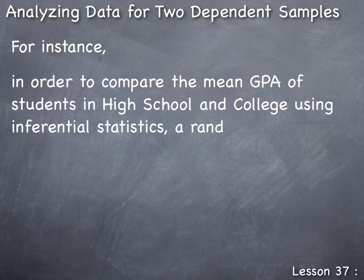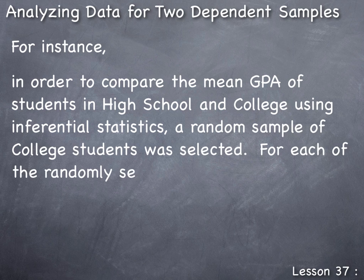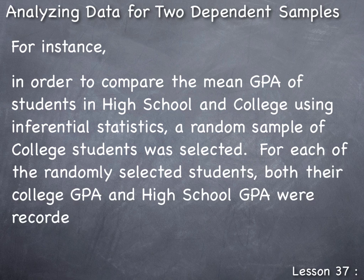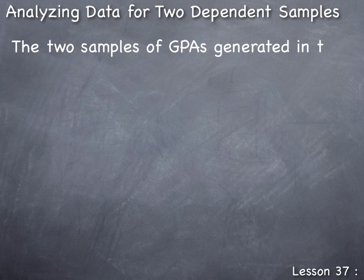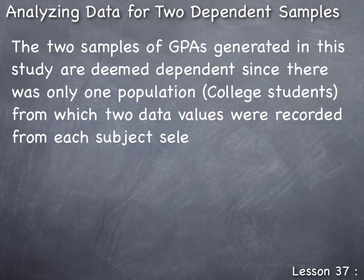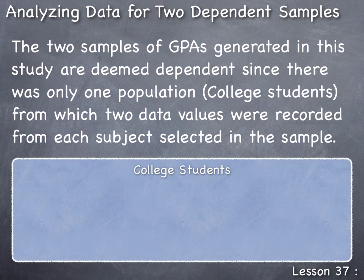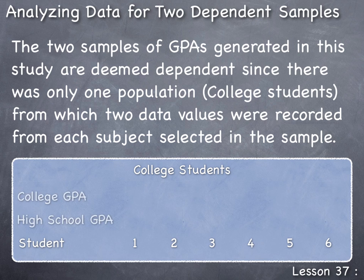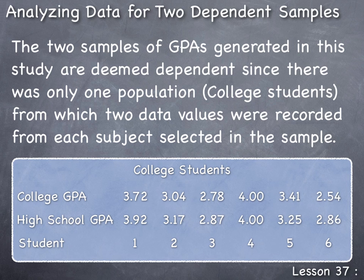For instance, in order to compare the mean GPA of students in high school and college, a random sample of college students was selected. For each of the randomly selected students, both their college GPA and high school GPA were recorded. The two samples of GPAs generated in this study are deemed dependent since there was only one population — college students — from which two data values were recorded from each subject. Thus these two lists of data values produce what we call two dependent samples.